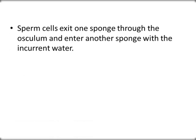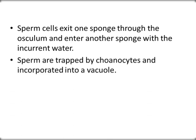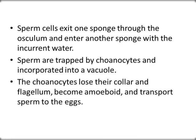Sperm cells exit one sponge through the osculum and enter another sponge via the incurrent canal. The sperms are trapped by choanocytes and incorporated into a vacuole. The choanocytes then lose their collars and flagellum, become amoeboid, and transport these sperms to the eggs.